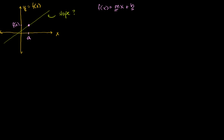And then we could take another point on this line. Let's say we take the point b right there. Then this coordinate up here is going to be the point b, f of b, because this is just the point when you evaluate the function at b — you put b in, you get that point right there. So that is f of b right there. Let me make it clear that this coordinate right here is the point a, f of a.